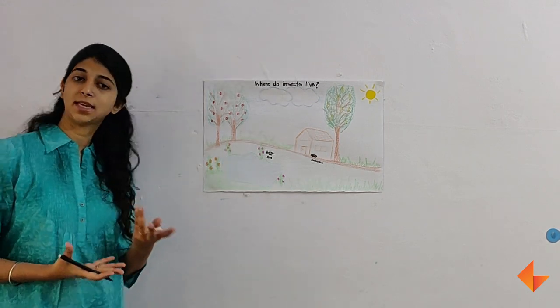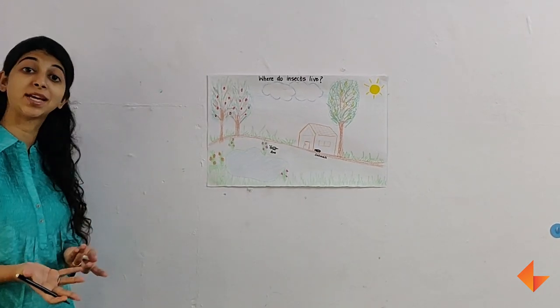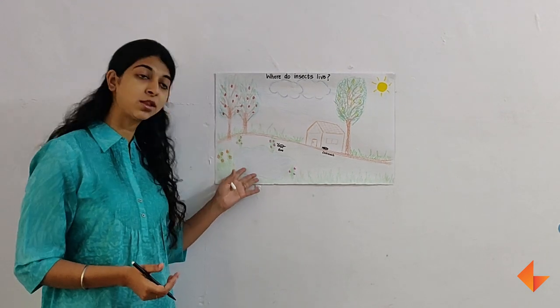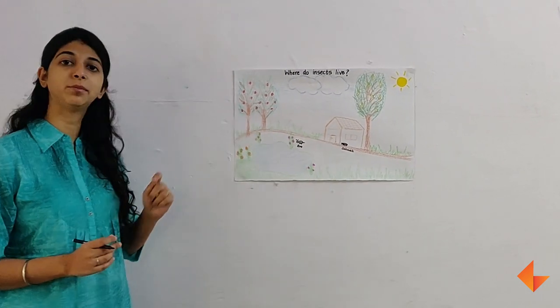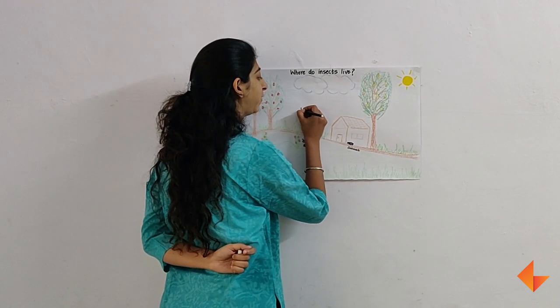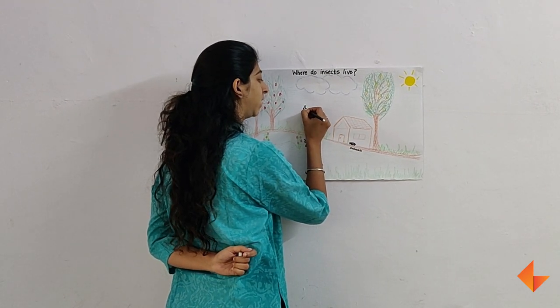What are some other insects that we could discuss? If children say butterflies. Are butterflies in the water? Children will say no. So where do you think we should draw the butterfly here? So maybe we can draw the butterflies flying in the air.